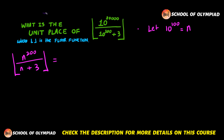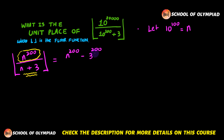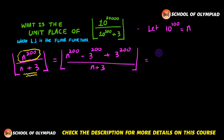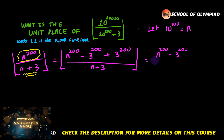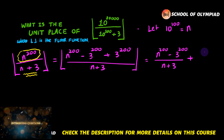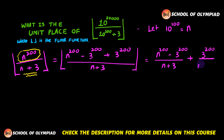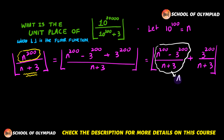The first thing we want to do is express the numerator in terms related to the denominator. We are going to subtract and add the quantity 3 raised to the power 200. This reduces the expression to the floor function of: (n^200 − 3^200)/(n+3) plus 3^200/(n+3). Let the first part be called A and the second part be called B.